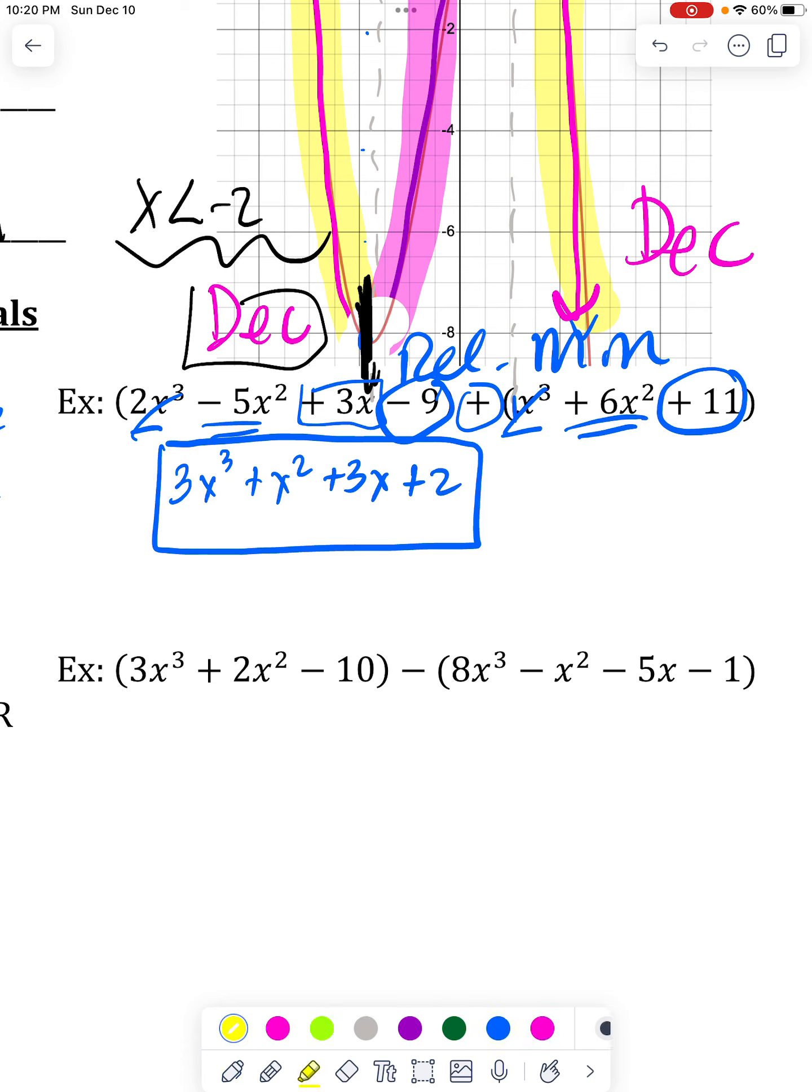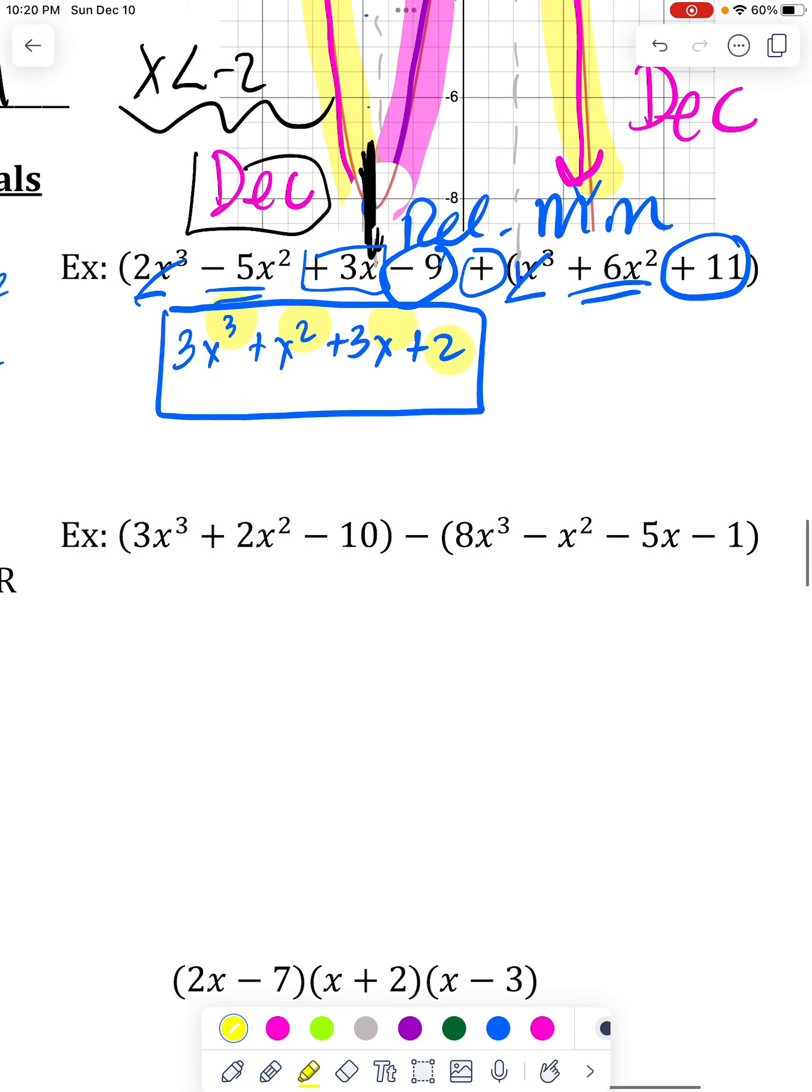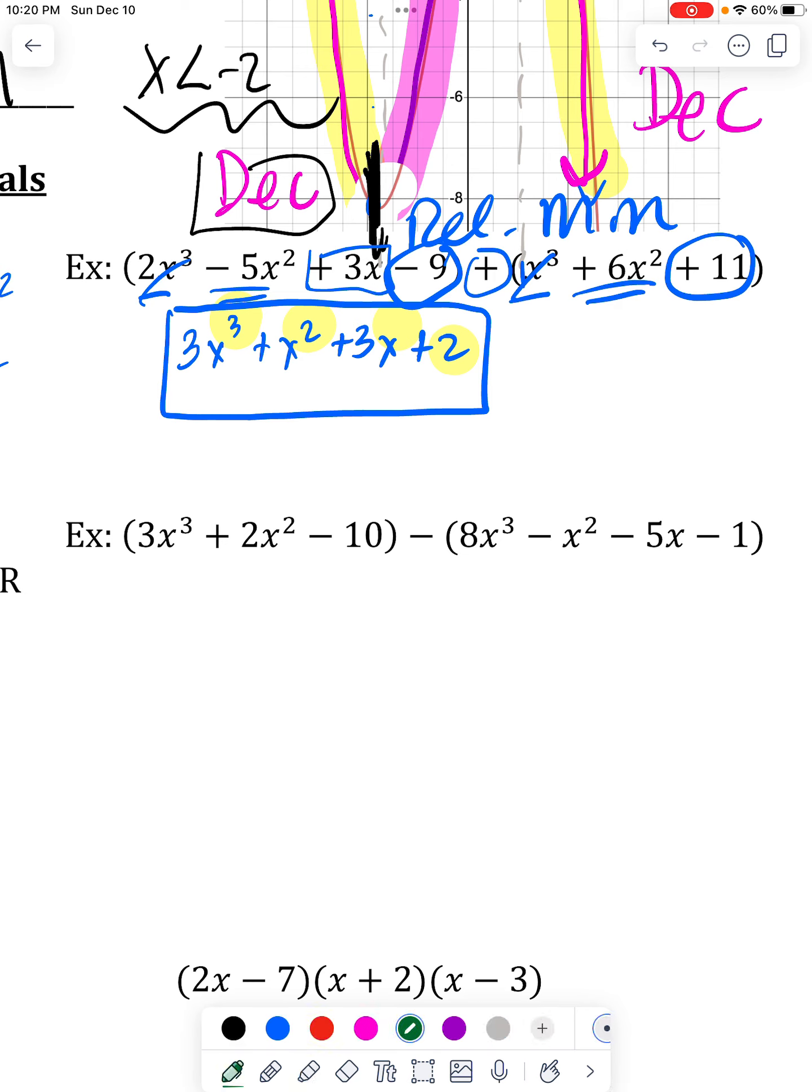you just want your powers to go from highest to lowest, and you shouldn't have any repeat powers, because then they could have been combined. So like mine go 3, 2, 1, and then a constant, meaning no power of x. Now, definitely with subtraction, there's a danger.